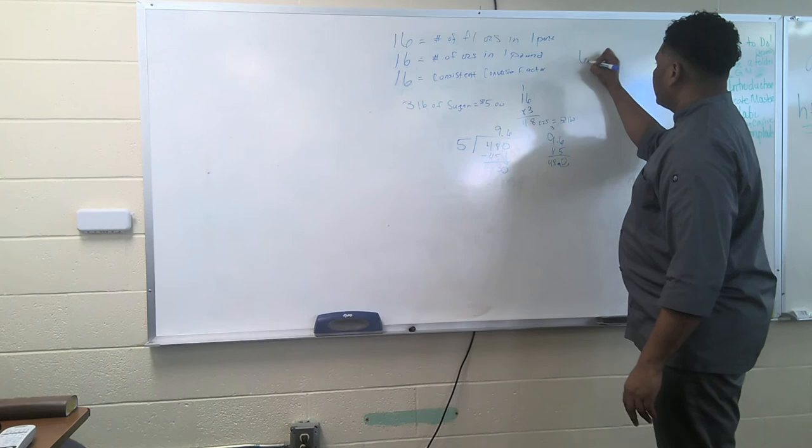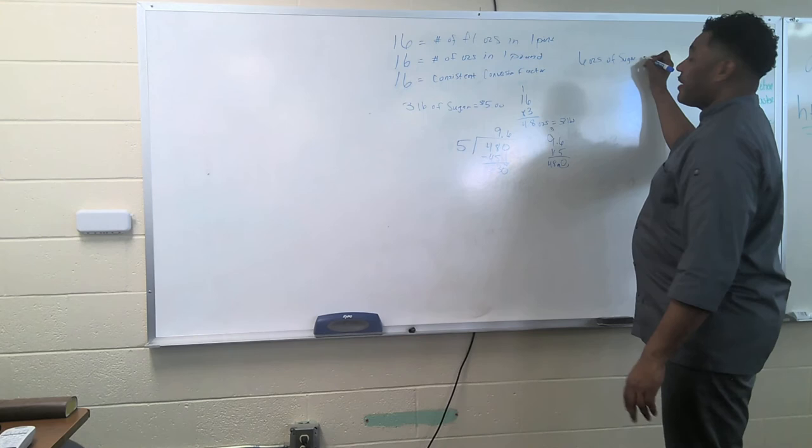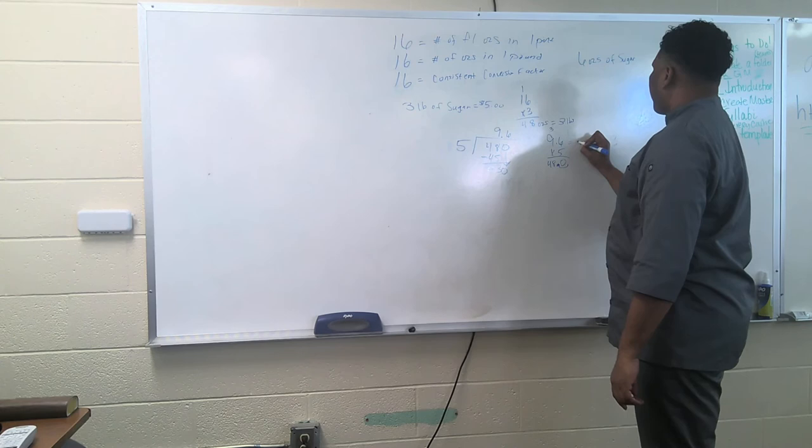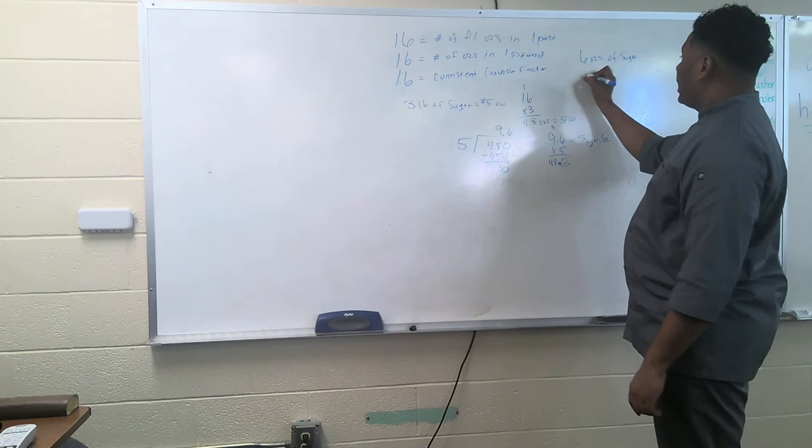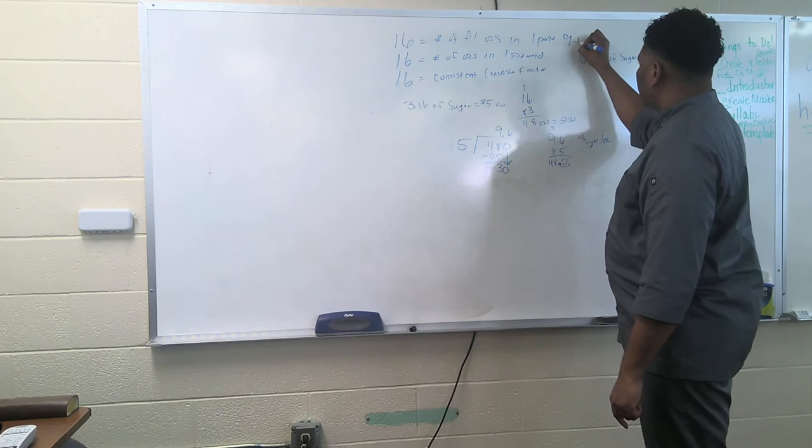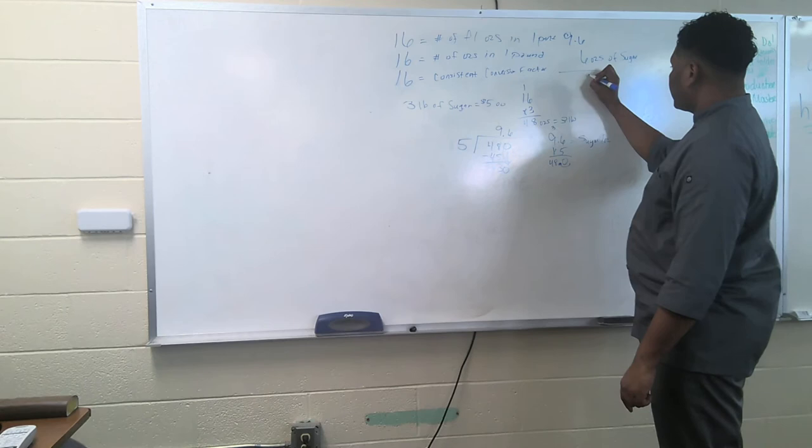Now, if there is a recipe that calls for six ounces of sugar, it's a very simple process. Now we know that sugar is 9.6 cents per ounce. So now we need six ounces of sugar. So we're going to take this amount and we're going to multiply by the cost per ounce. So 9.6 multiplied by six.